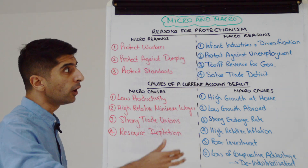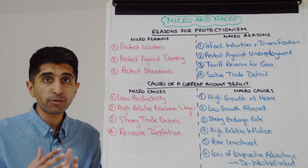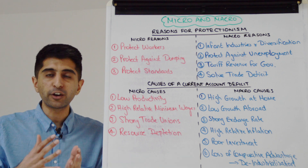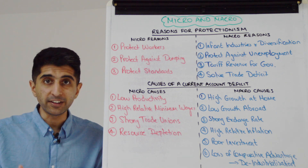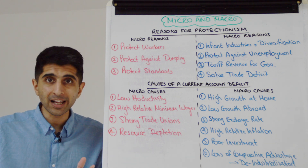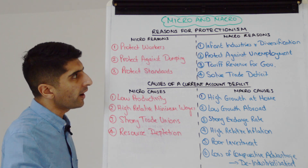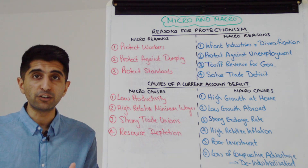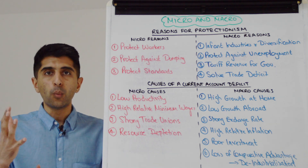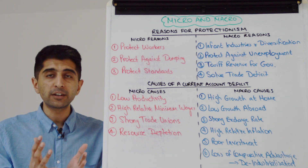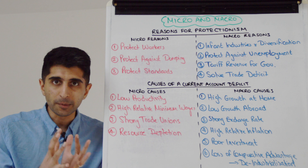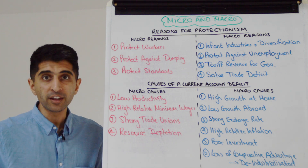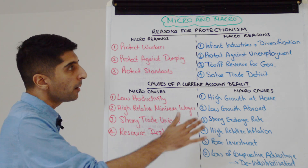What about macro reasons for protectionism? You can talk about protecting infant industries, giving them breathing space and economies of scale benefits to grow, develop, and then compete worldwide. This allows for diversification, especially in developing countries where there are over-specialisation concerns. This is a good macro argument for balanced growth and sustainable growth over time.